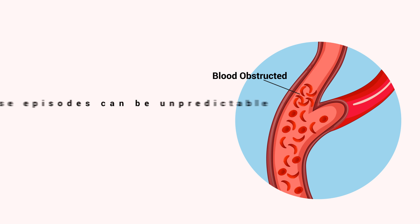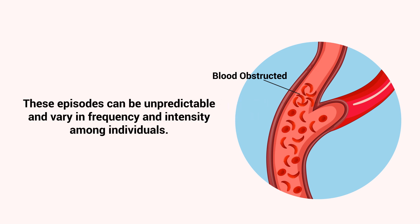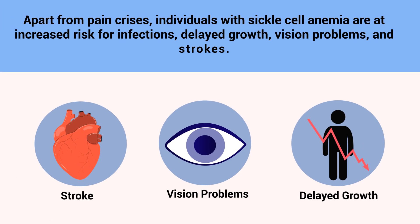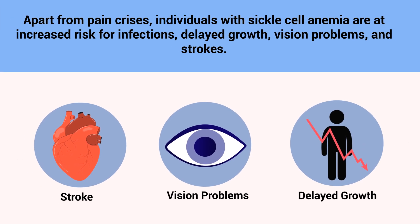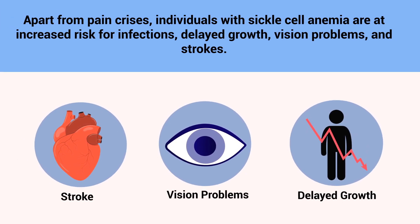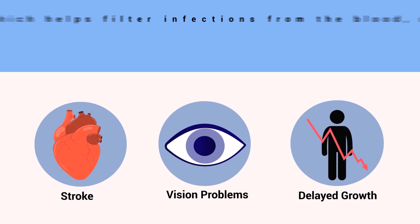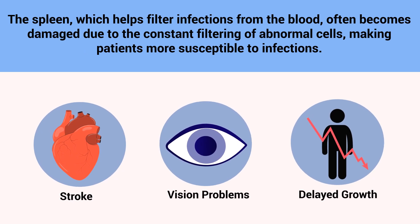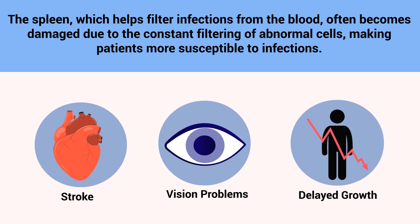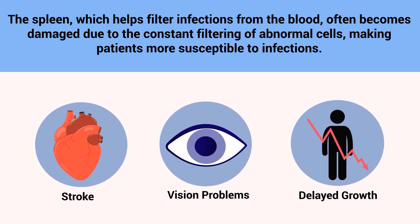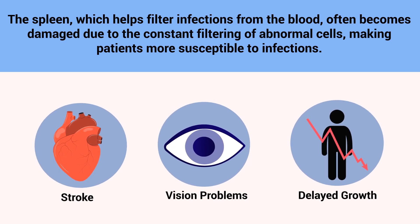These episodes can be unpredictable and vary in frequency and intensity among individuals. Apart from pain crises, individuals with sickle cell anemia are at increased risk for infections, delayed growth, vision problems, and strokes. The spleen, which helps filter infections from the blood, often becomes damaged due to the constant filtering of abnormal cells, making patients more susceptible to infections.